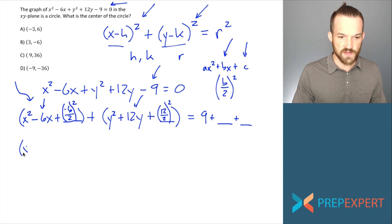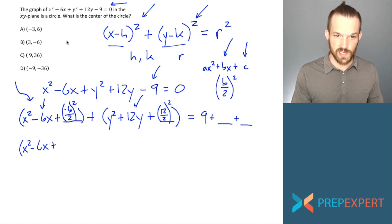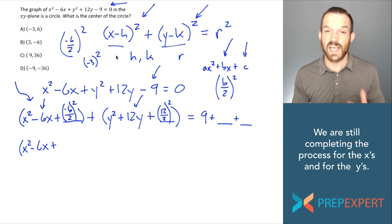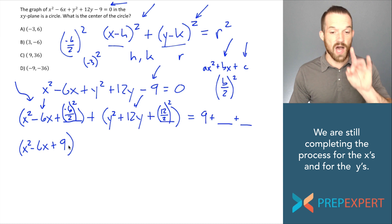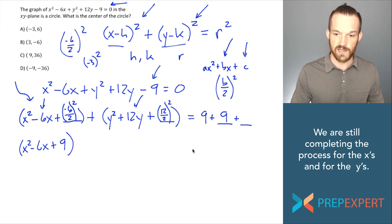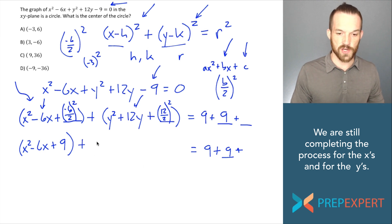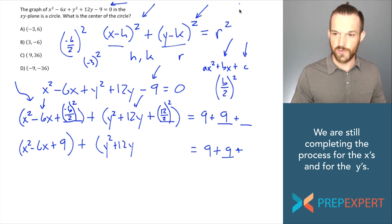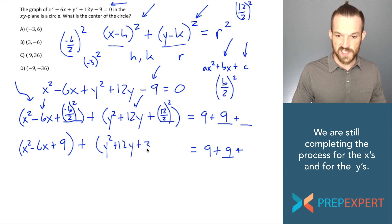Simplifying inside the x-parentheses: x squared minus 6x, and negative 6 over 2 is negative 3, so negative 6 over 2 quantity squared becomes negative 3 quantity squared, which is positive 9. I've filled in the blank for the x's on the left, so I fill the same number — 9 — into the first blank on the right. For the y's: y squared plus 12y, and 12 over 2 is 6, and 6 quantity squared is 36. So the c-term for the y's is 36, meaning the second blank contains 36.